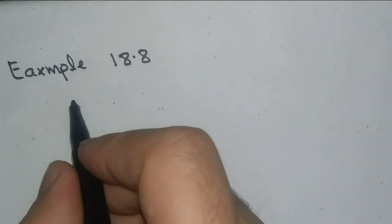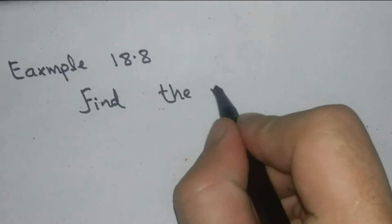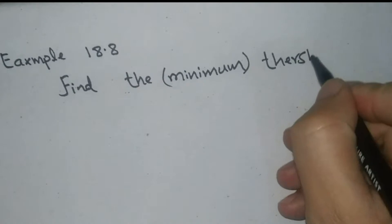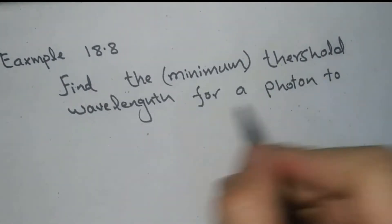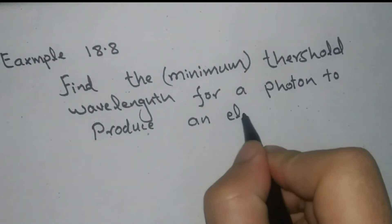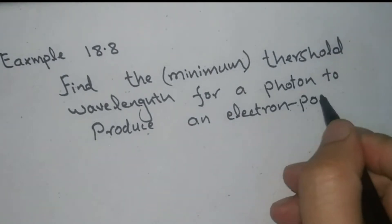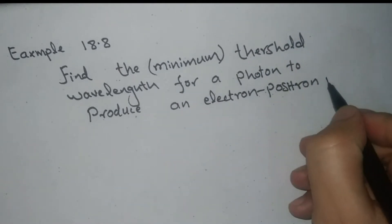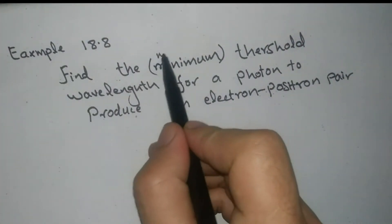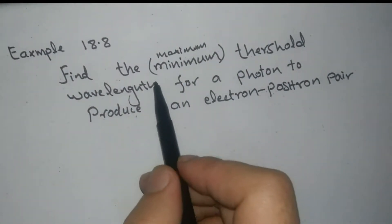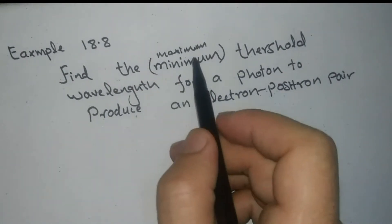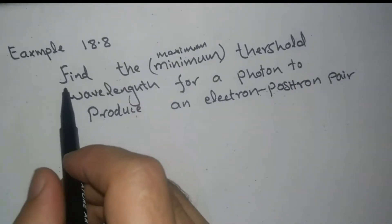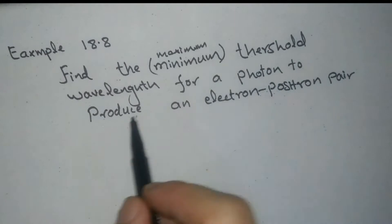Find the minimum threshold wavelength for a photon to produce an electron-positron pair. The wavelength is inversely proportional to the energy, so we need the minimum energy, which means we need the maximum wavelength.